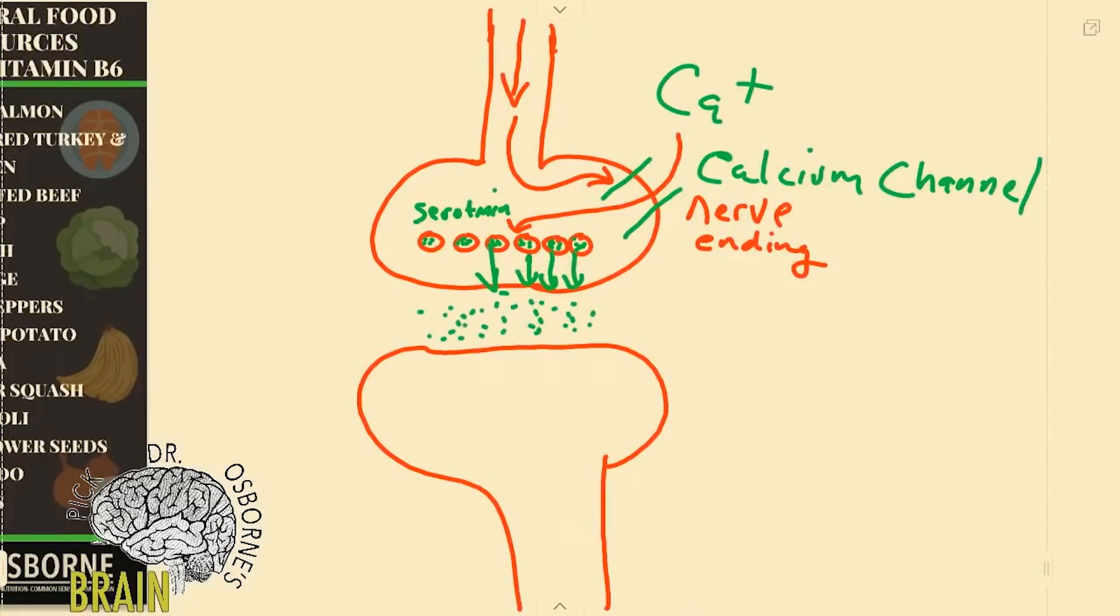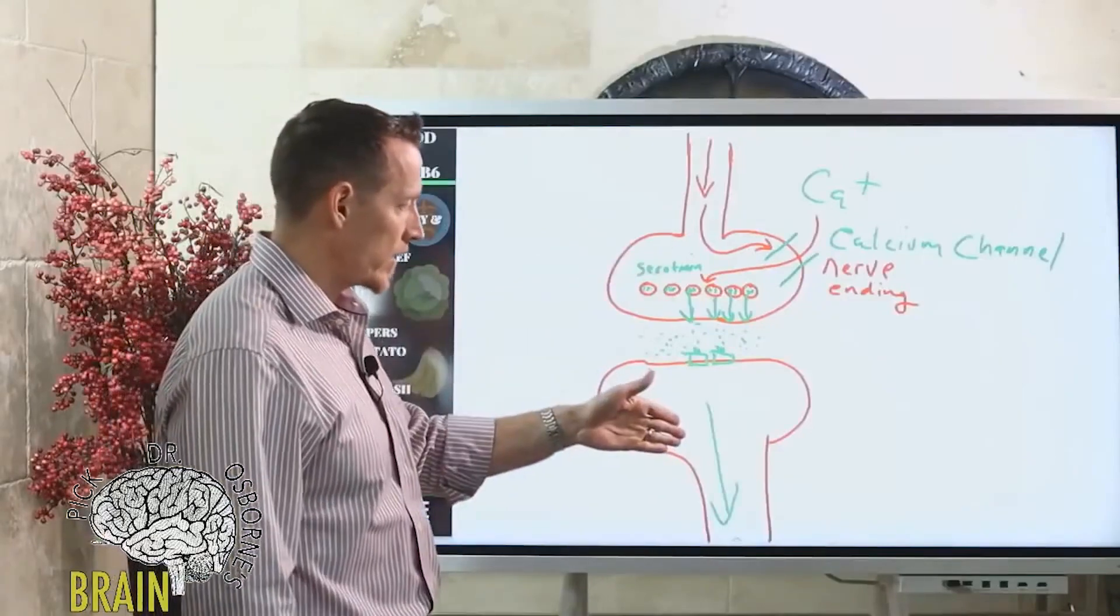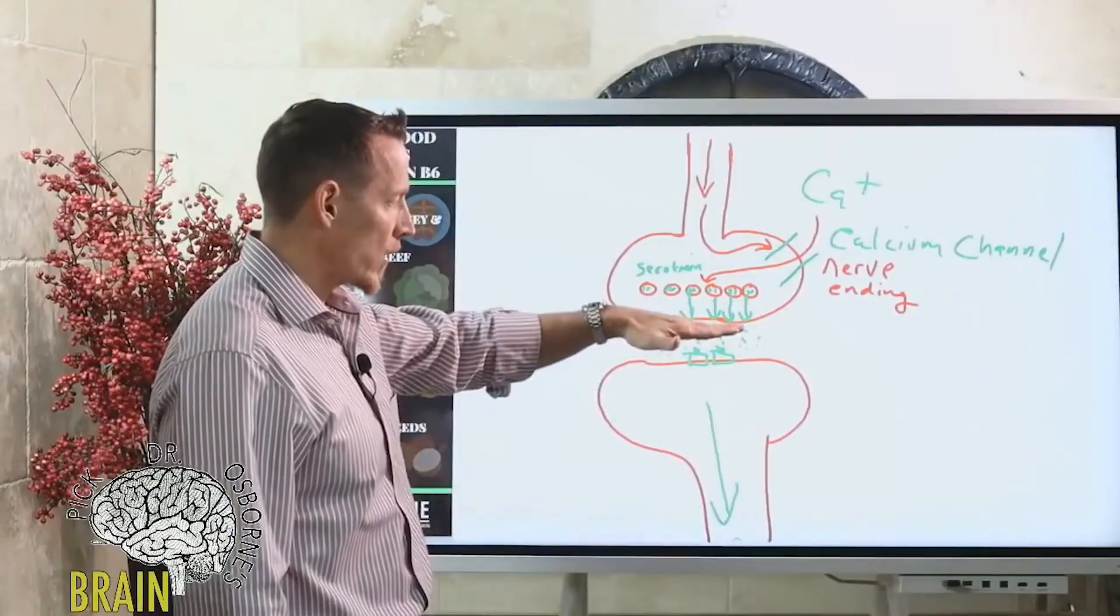On the other side, this side has little receptors so that serotonin can hit it. And when that happens it depolarizes this nerve and it transmits, it allows that message to continue to transmit so that this nerve can talk to that nerve. If this nerve can't talk to that nerve, that's depressed function, aka depression.